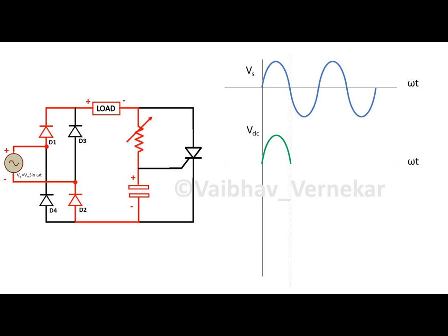In the positive half cycle, diodes D1 and D2 are forward biased and current flows through the circuit as shown. In the negative half cycle, diodes D3 and D4 are forward biased and current flows in the circuit.